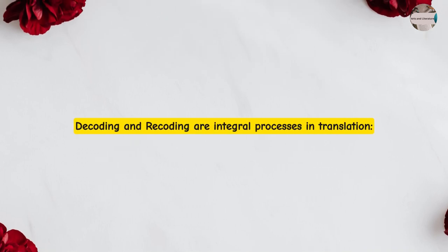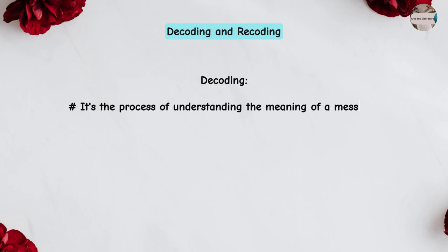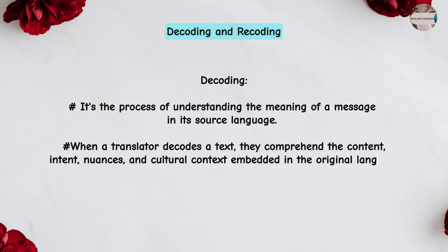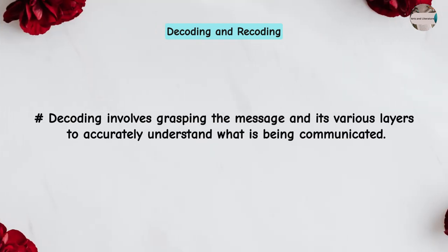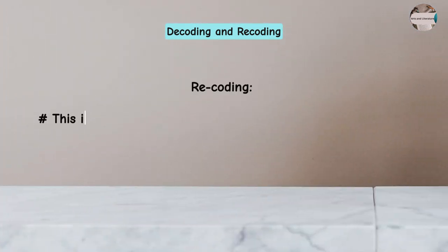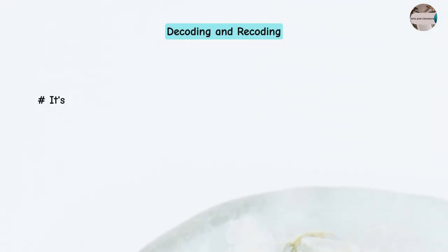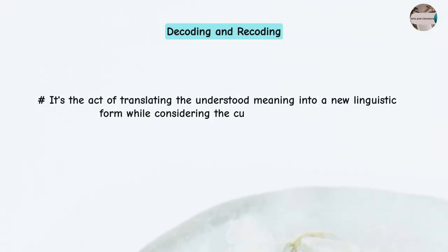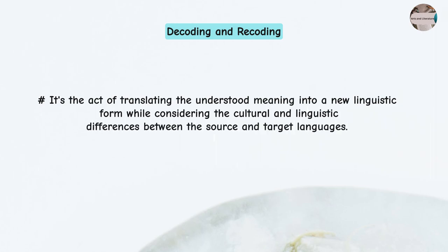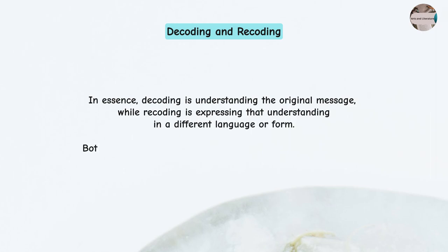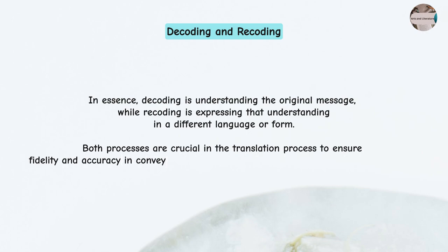Decoding and encoding are integral processes in translation. Decoding is the process of understanding the meaning of a message in its source language. When a translator decodes a text, they comprehend the content, intent, nuances, and cultural context embedded in the original language. Encoding involves re-expressing or rephrasing the decoded message in the target language — translating the understood meaning into a new linguistic form while considering the cultural and linguistic differences between the source and target languages. Both processes are crucial to ensure fidelity and accuracy in conveying the intended message from one language to another.